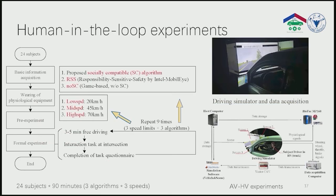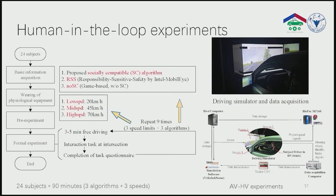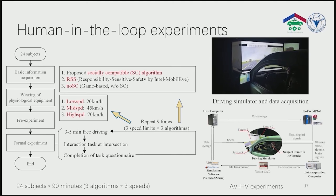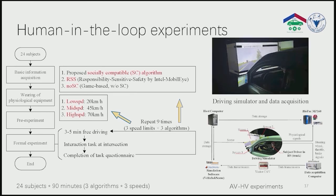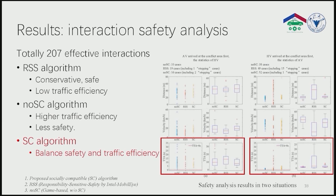In order to validate our decision algorithm, we recruited 24 subjects to participate in a human-in-the-loop experiment. The proposed social-compatible algorithm is compared with two benchmark algorithms. Subjects were asked to drive the truck through a series of intersections and to interact with AVs deployed with the three algorithms. Three different speed limits are set in the scenario. Each experiment takes about 90 minutes. We collected subjects' physiological signals and their subjective feelings through questionnaires. In total, we collected 207 effective interactions.